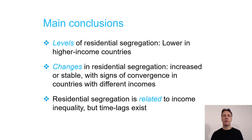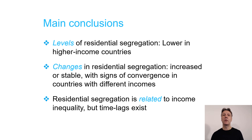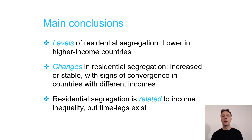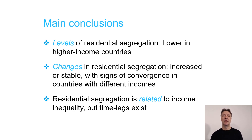The main conclusions from this first comparative study of residential segregation across the world are as follows. Levels of segregation are lower in higher-income countries and higher in middle-income countries. There are important changes taking place in residential segregation, although they are slow. We also see some convergence between higher-income and middle-income countries: in higher-income countries, both inequality and segregation levels have grown, while in middle-income countries both have somewhat decreased. We also find that residential segregation is related to income inequality, but as time lags exist, it takes time before changes in income inequality are translated into changes in residential segregation.